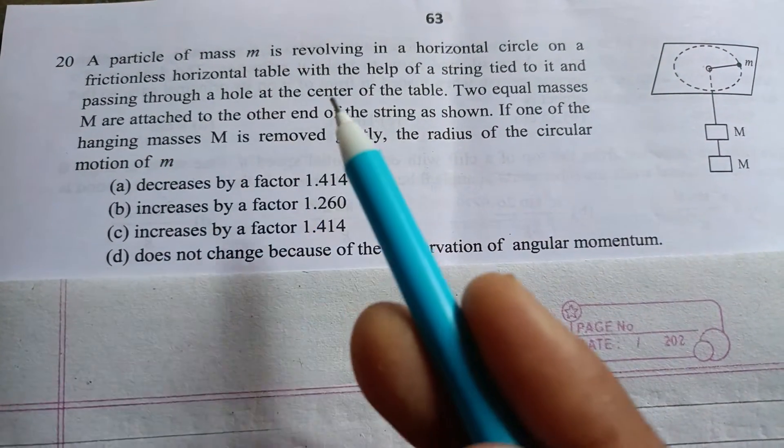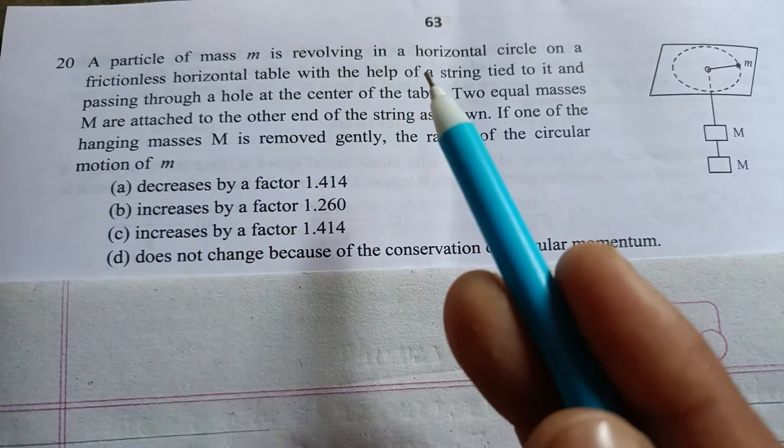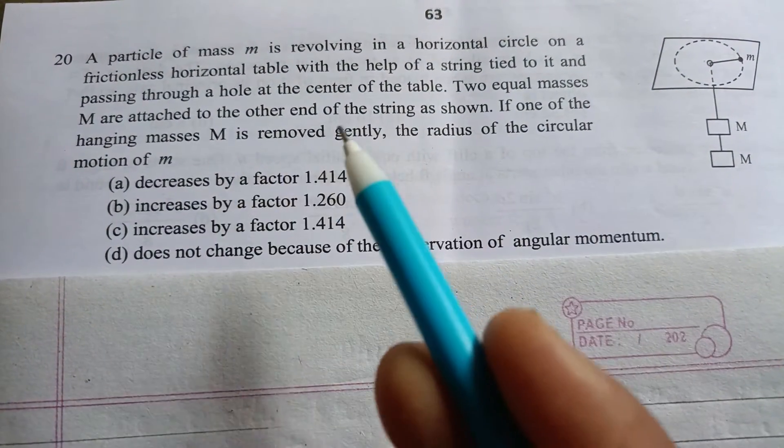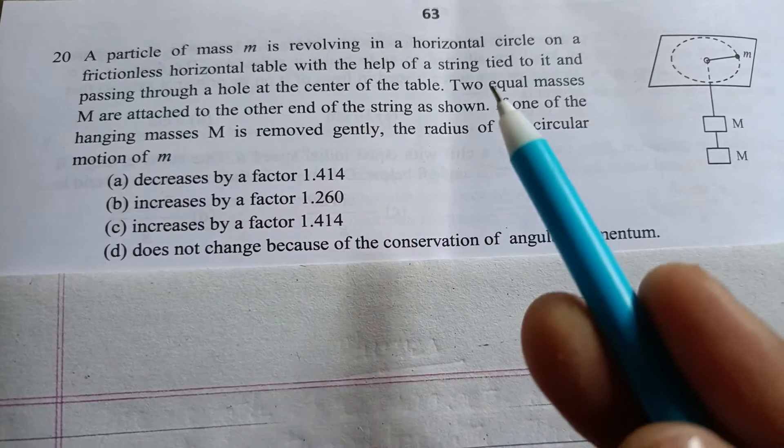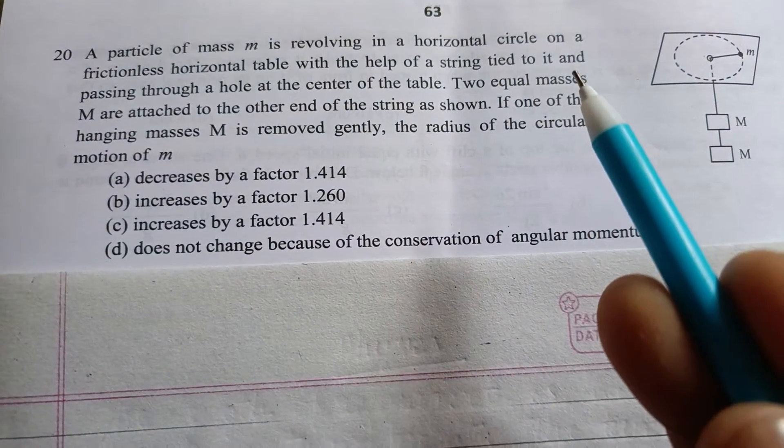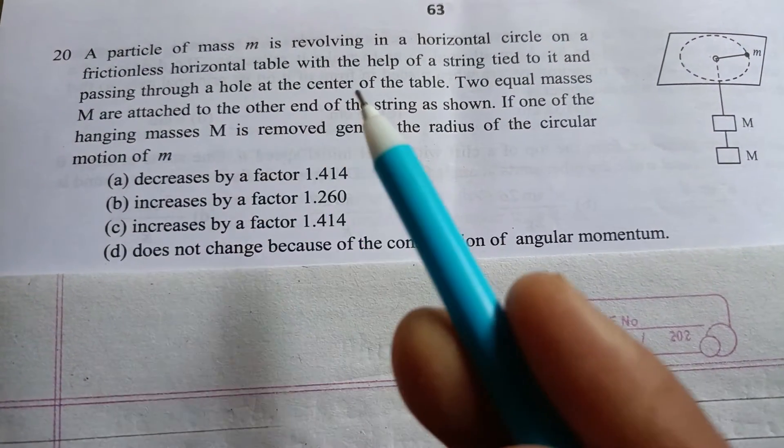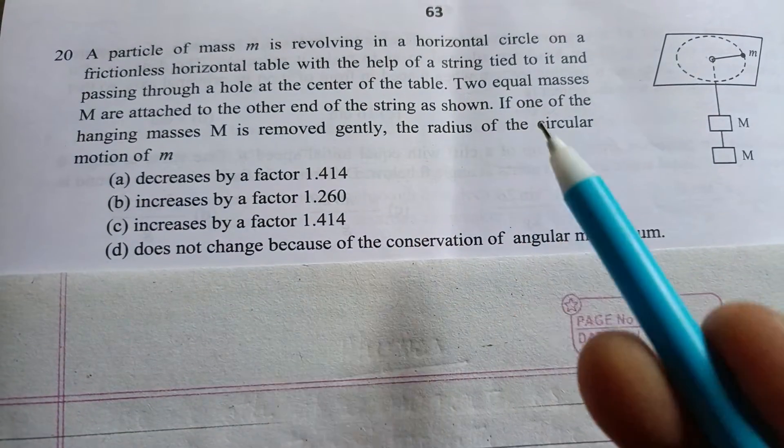A particle of mass m is revolving in a horizontal circle on a frictionless horizontal table with the help of a string tied to it and passing through a hole at the center of the table.